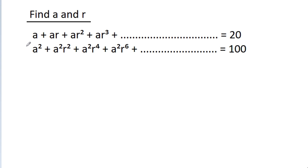In this video, we have given that a plus ar plus ar squared plus ar cubed plus up to infinity is equal to 20. And a squared plus a squared r squared plus a squared r to the power 4 plus a squared r to the power 6 plus up to infinity is equal to 100. We have to find the value of a and r.